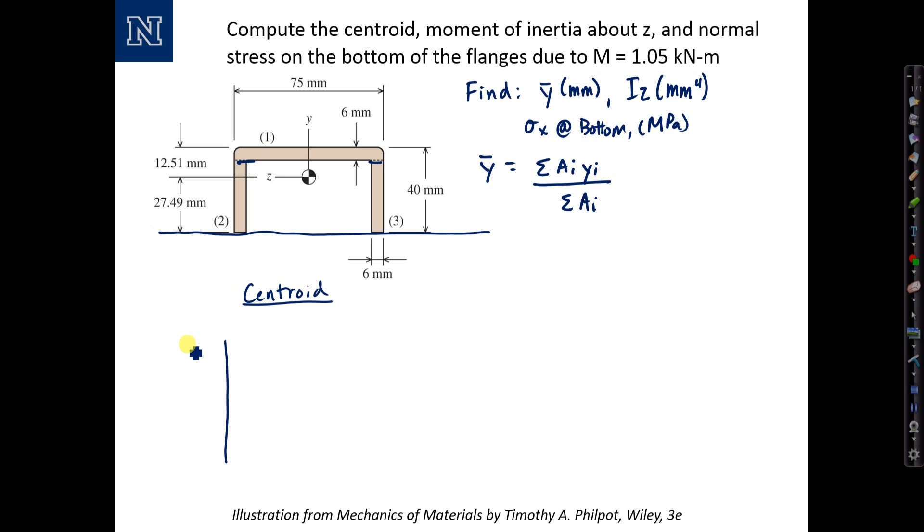And in the table, I am going to tabulate the total area of each section in millimeters squared. I'm going to tabulate y sub i in millimeters. And I'm going to tabulate the product of a sub i times y sub i, which will be millimeters cubed. I'll do this for section one, section two, and section three. And then in the end, I'm going to sum them.